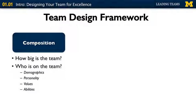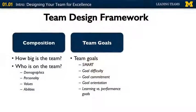This team design framework consists of three major components. The first component is composition. We're going to talk about how big your team should be and what are some of those trade-offs with small or big teams. We'll also talk about who's on your team in terms of demographics, personality, values, abilities, and how do you think about diversity along these different attributes. We'll also talk about team goals — how do you establish smart goals in your team, how do you drive commitment to those goals, and how do you balance trade-offs between learning-oriented goals versus performance-oriented goals. Composition and team goals will be our focus in this first session.